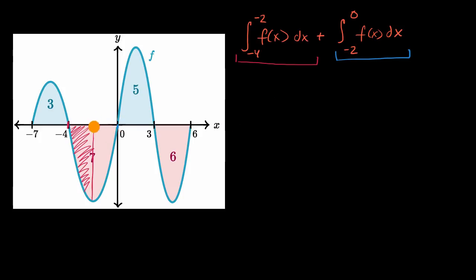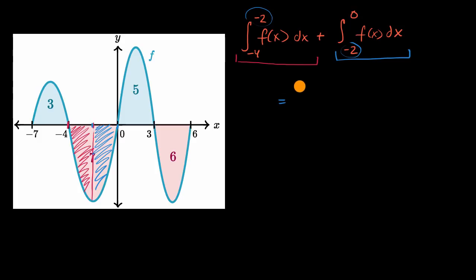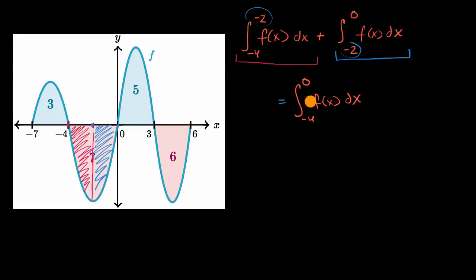We also need to figure out the integral from x equals negative two to zero of f of x dx. When you look at the sum of these two definite integrals, notice the upper bound of the first is the lower bound of the second. This means you can merge them — it equals the definite integral going from x equals negative four all the way to x equals zero of f of x dx. This is one of our integration properties: if the upper bound of one integral matches the lower bound of the next, and we're integrating the same function, we can combine them.